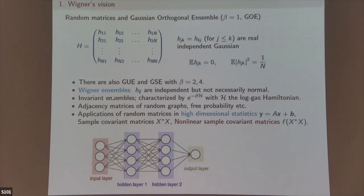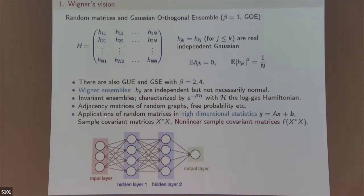The invariant ensemble is really a model of eigenvalues of the matrix — it's quite different from the matrix model because you don't have to solve the eigenvalue equations. There are also adjacency matrices of random graphs, Bernoulli probabilities, and recently many implications in high-dimensional statistics.